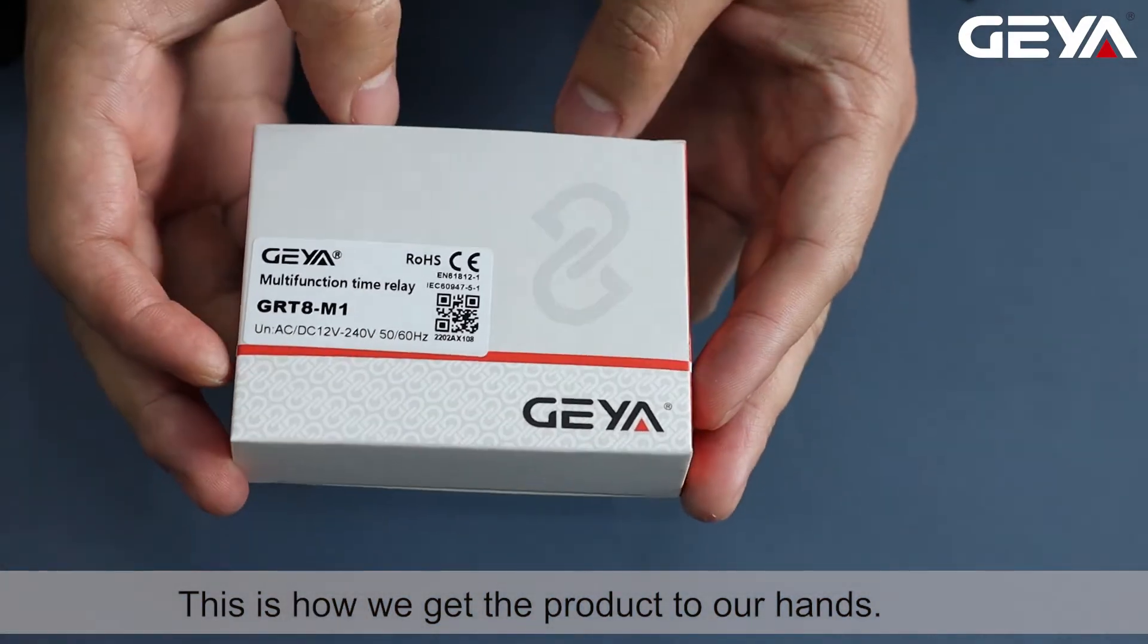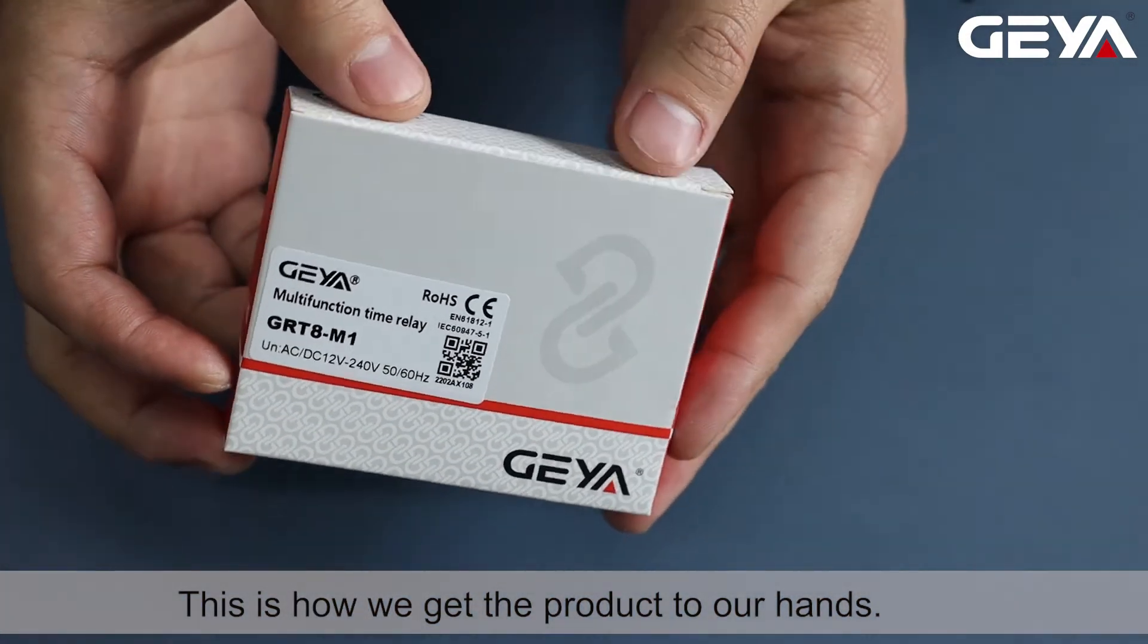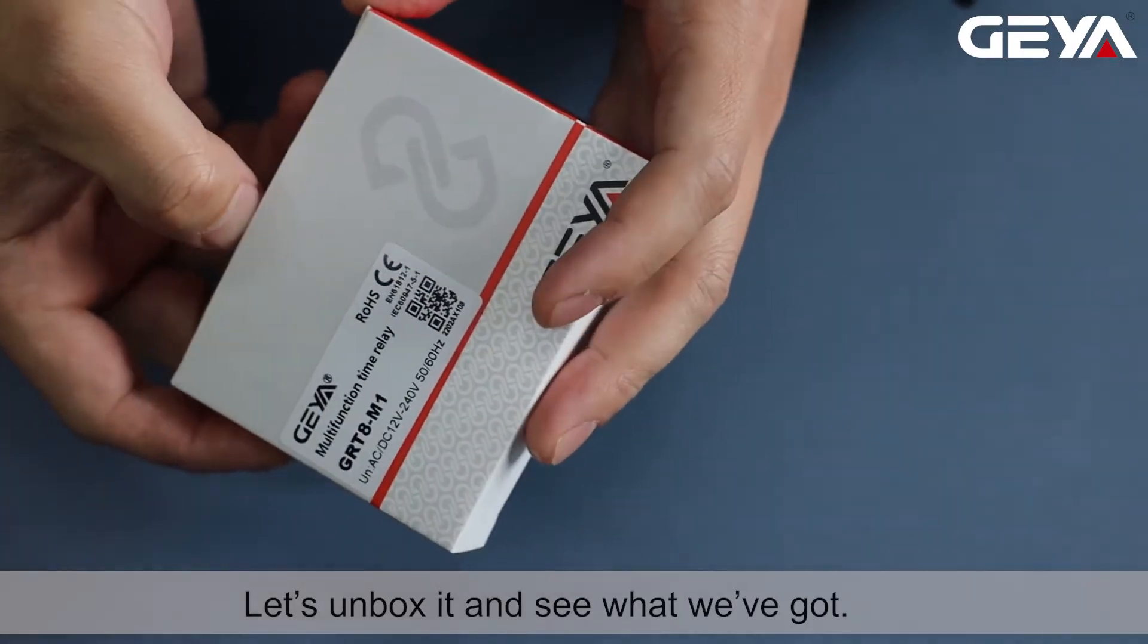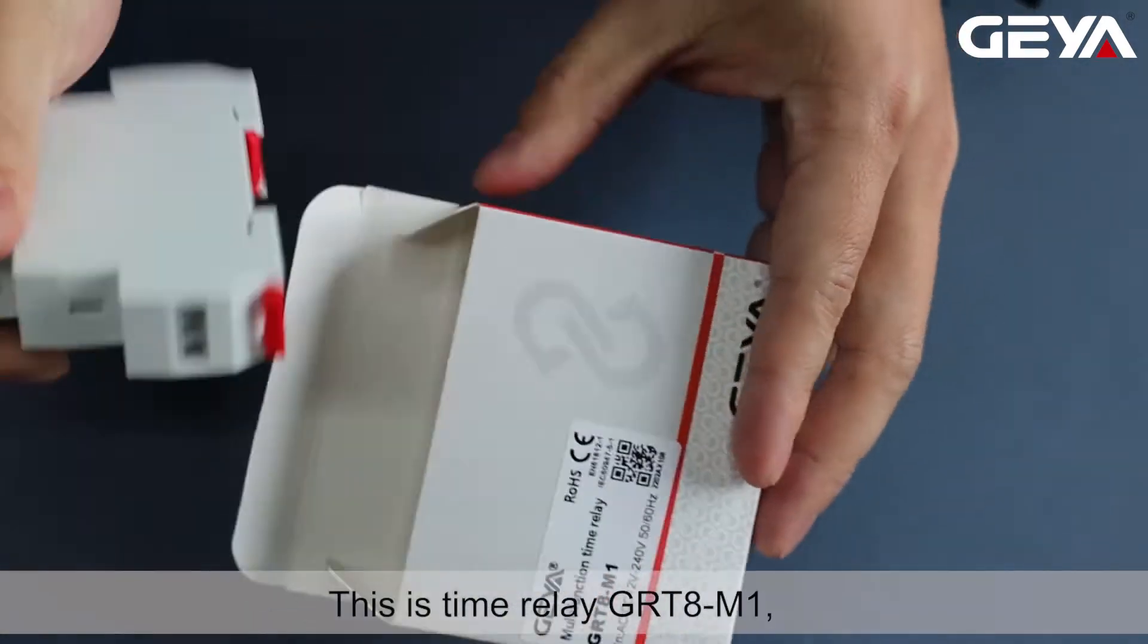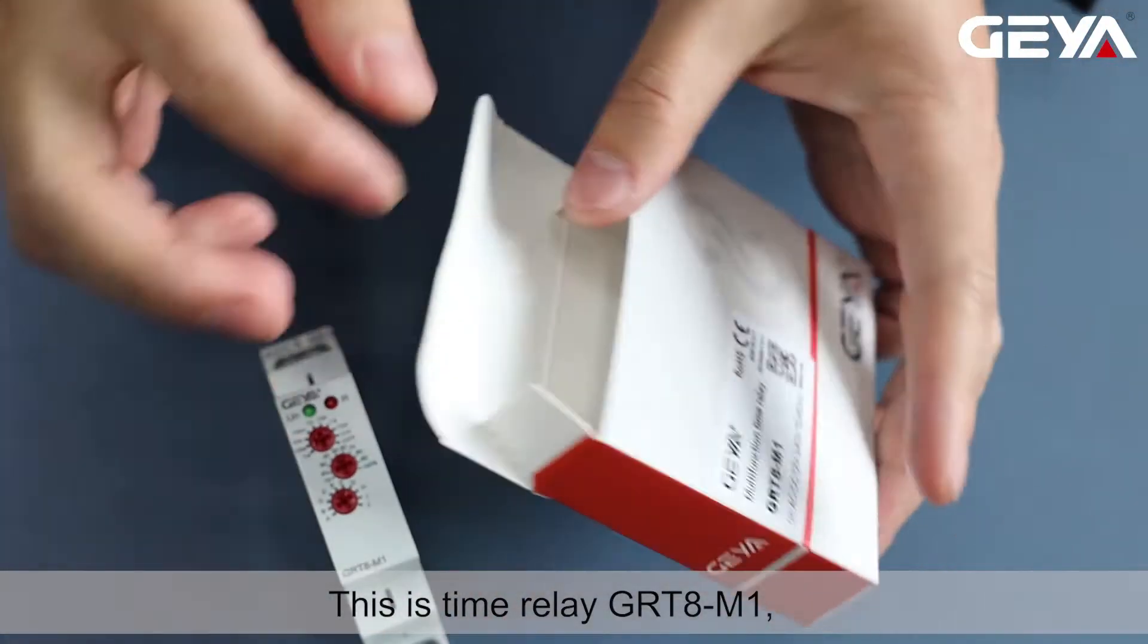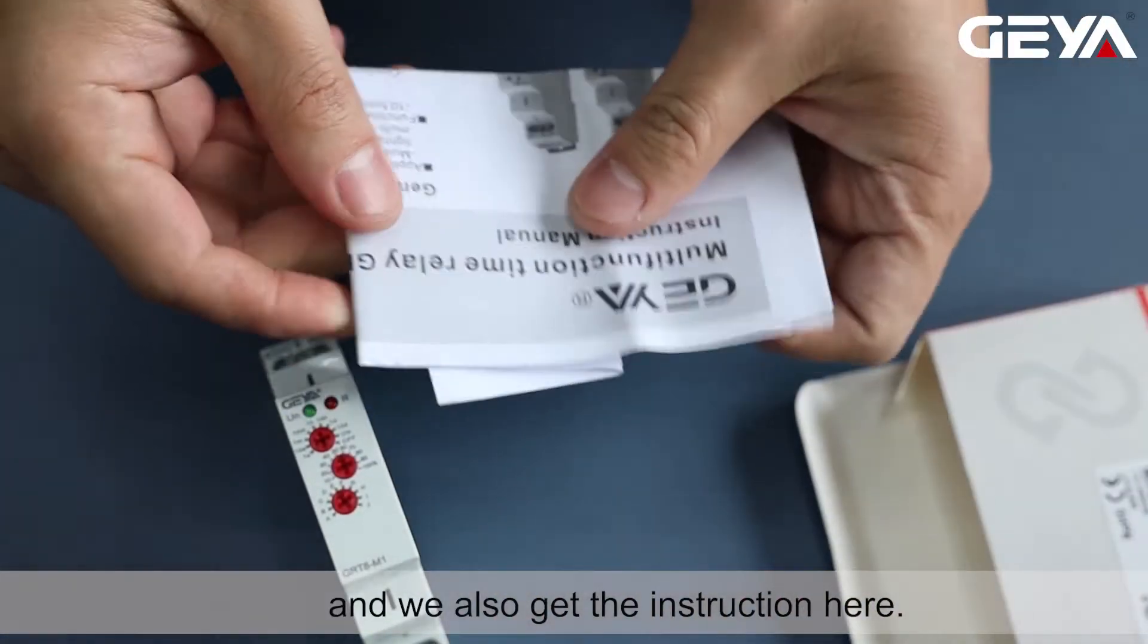This is how we get the product to our hands. Let's unbox it and see what we've got. This is Time Relay GRT8M1, and we also get the instruction here.